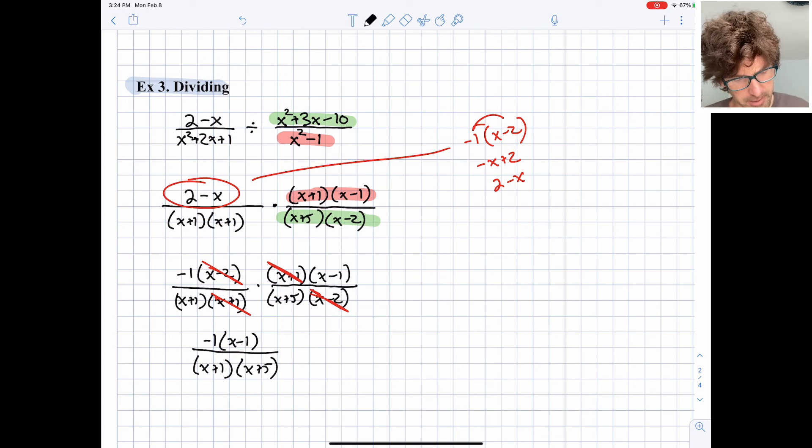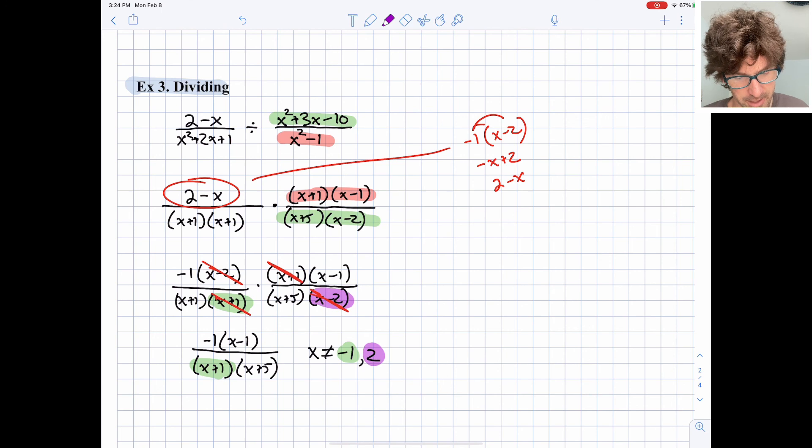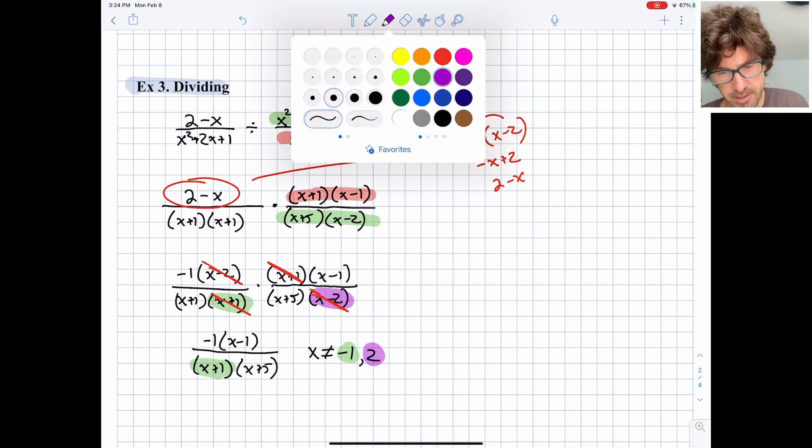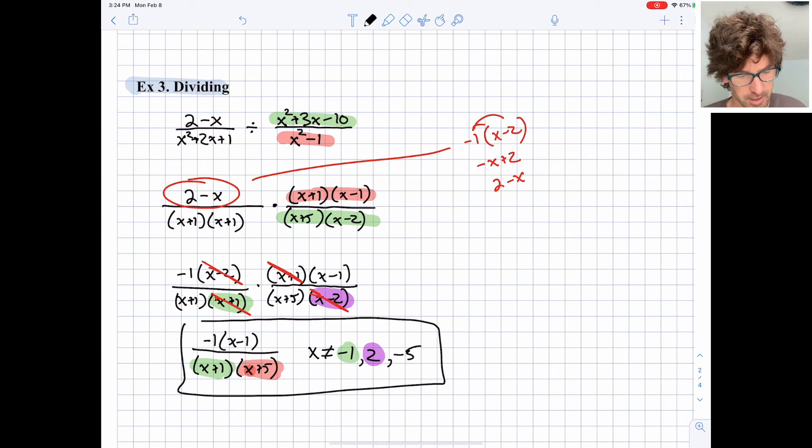I just want to keep track that x cannot be negative 1 and x cannot be positive 2. Negative 1 because of that term that we lost there, which honestly still exists in our final simplified form. 2 because of that term that we lost there. And then additionally, we still have x plus 5 in our final answer, so x can additionally not be negative 5. So that would be my final answer for that one.